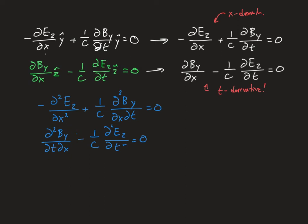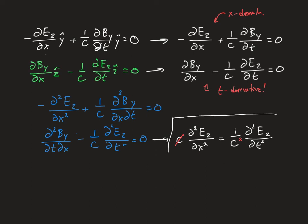After a little algebra chasing around the factors of c, the final result is a single equation just for the electric field — only Ez. We have a second derivative with respect to x on one side and a second derivative with respect to t on the other. Dividing by a factor of c puts it in standard form: this is called the wave equation.